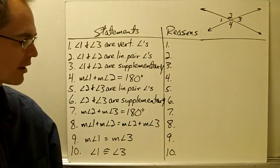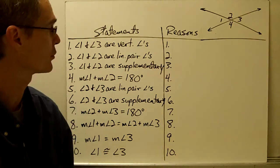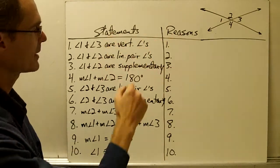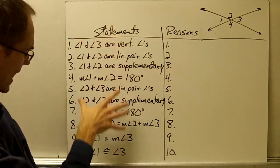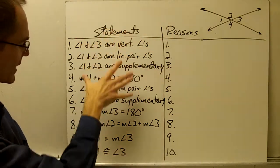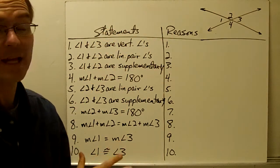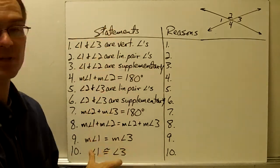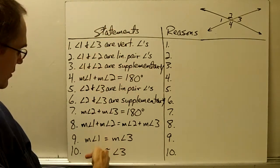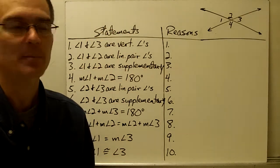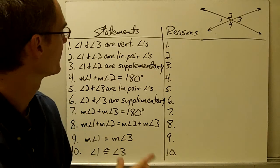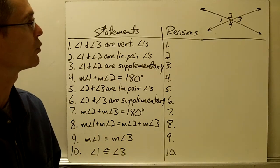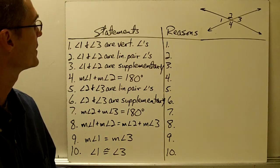We're going to start off doing this as a two-column proof. In your notes you have two columns — statements and reasons. You actually already have all of the statements in the proof laid out in the statements column, and you can see there are going to be a total of 10 statements in this proof. Let's fill in the reasons for each one.